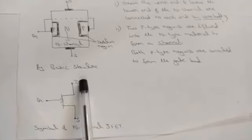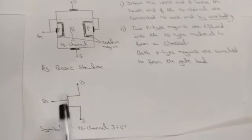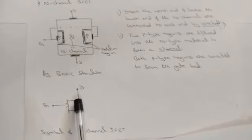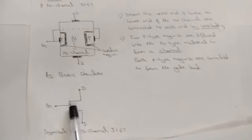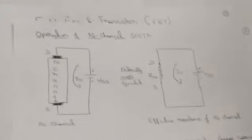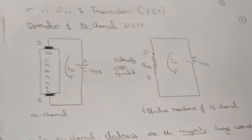This is the basic symbol of an N-channel JFET, showing gate, drain, and source. In N-channel, source is placed below and drain above. Since electrons are the majority charge carriers in N-channel, the flow direction is inward. The flow of electrons is towards the source. If the flow direction of electrons is inside, it is known as N-channel JFET.